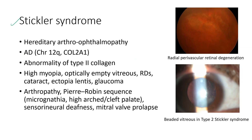Next is Stickler syndrome, also known as hereditary arthroophthalmopathy. It is an autosomal dominant condition affecting chromosome 12q with abnormality of type 2 collagen. The ocular features include high myopia, optically empty vitreous, retinal detachments, cataract, ectopia lentis, and glaucoma, with fundus images showing radial perivascular retinal degeneration and beaded vitreous. The systemic features include arthropathy, Pierre Robin sequence with micrognathia and cleft palate, sensorineural deafness, and mitral valve prolapse.